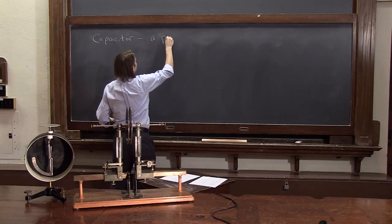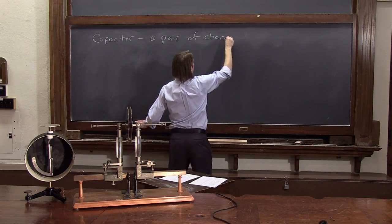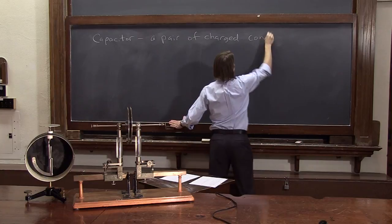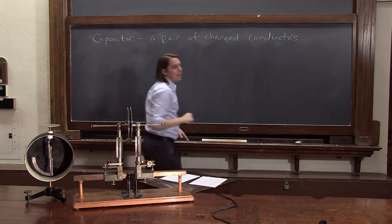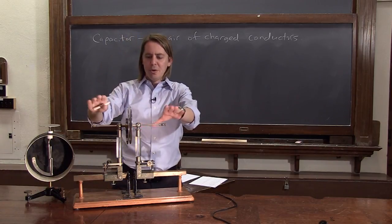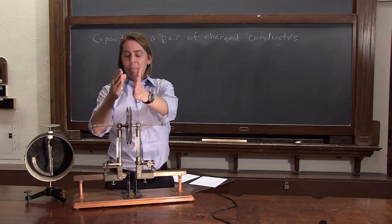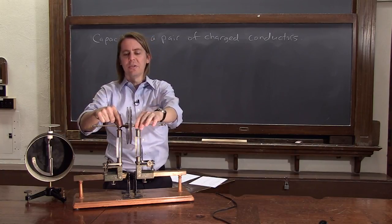Capacitor is basically a pair of charged conductors. Here's an example of what a capacitor might look like. Here's one we're going to do demos with. It's two metal plates. So in this case, the conductor is, of course, a metal, which it usually is in circuits.